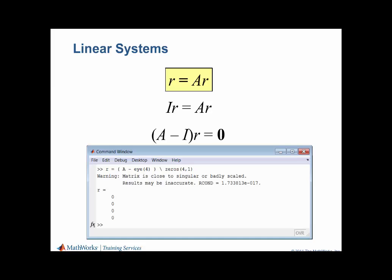By the theory of linear systems, we know that this is the only solution if the matrix A minus I is non-singular. Therefore, this system has non-trivial solutions only if A minus I is singular. Let's see how we can find a solution to this system using a better approach.